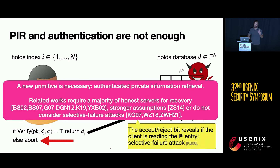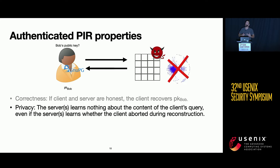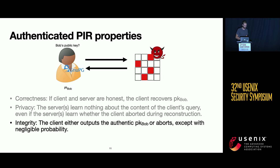Let's see which properties we'd like our new primitive to ensure. The first is correctness: if everyone behaves honestly, Alice recovers the correct key for Bob. The second is privacy: we don't want to disclose information to the server about Alice's query, even if the server learns whether the client aborted during reconstruction — this is exactly to defend against selective failure attacks. The third property is that either Alice outputs the authentic public key for Bob, or she aborts, except with negligible probability.